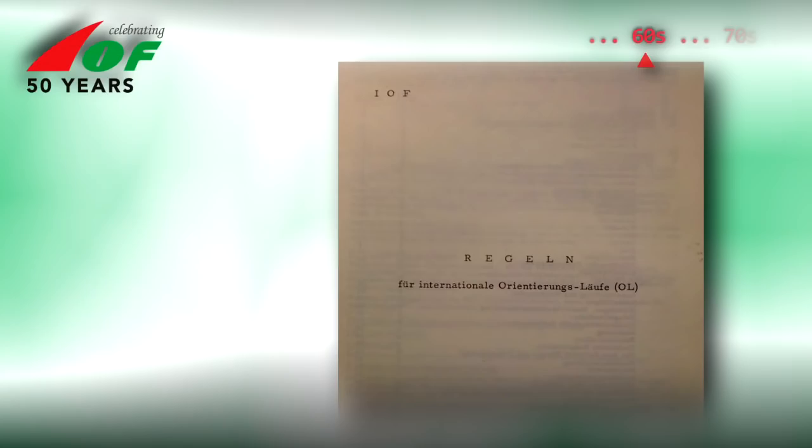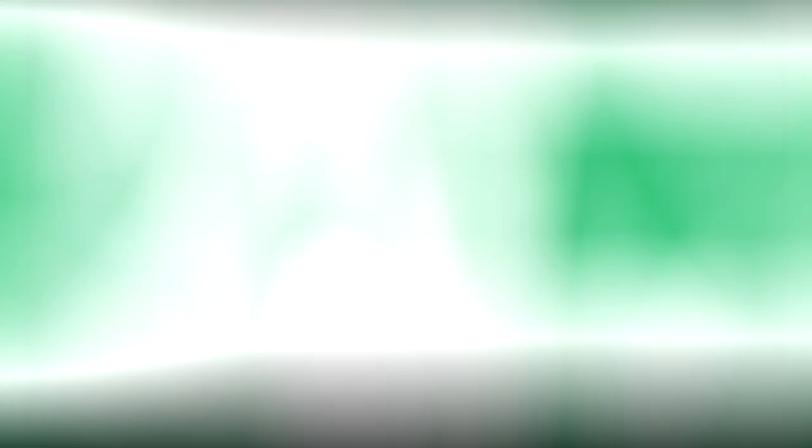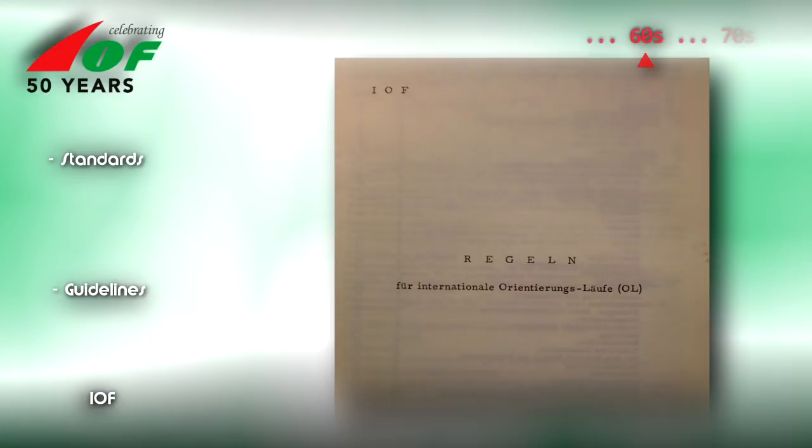The 1960s. The official language of the IOF was German. Control descriptions were therefore written in German. Different countries had different traditions in map making and there was no universal standard.